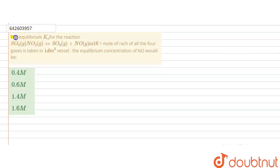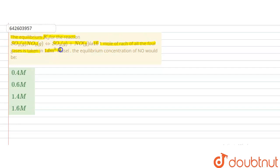Hello students. The question is: the equilibrium constant Kc for the reaction SO2 + NO2 → SO3 + NO is 16. One mole of each of all four gases is taken in a one decimeter cube vessel. The equilibrium concentration of NO would be?